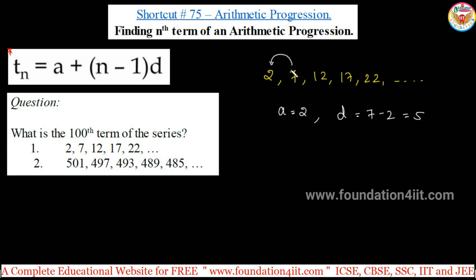7 minus 2 is 5, 12 minus 7 is 5, 17 minus 12 is 5. If it is the same difference, then only we can call it as an arithmetic progression. Now a is the first term in the series, d is the common difference, and here n is which term we have to find out. We need to find out 100th term now, so n equals 100.